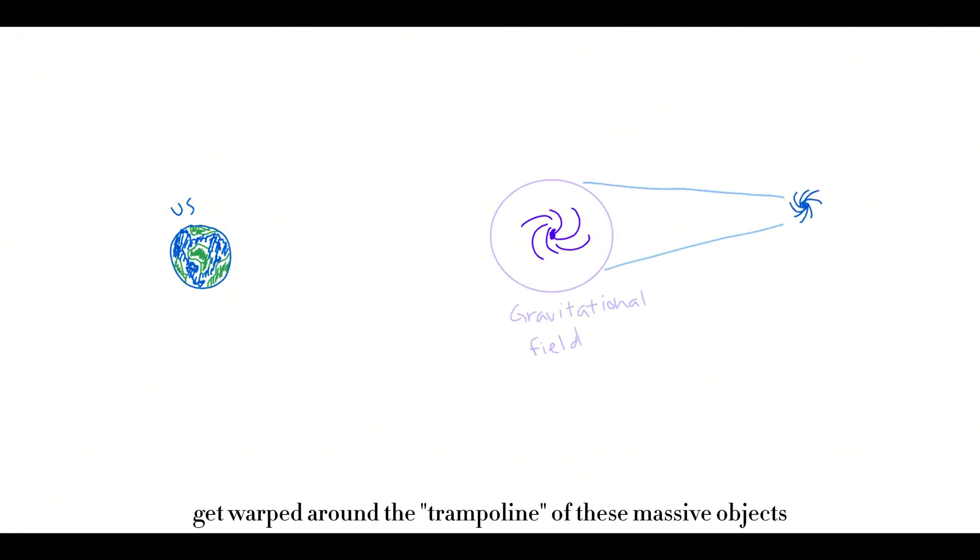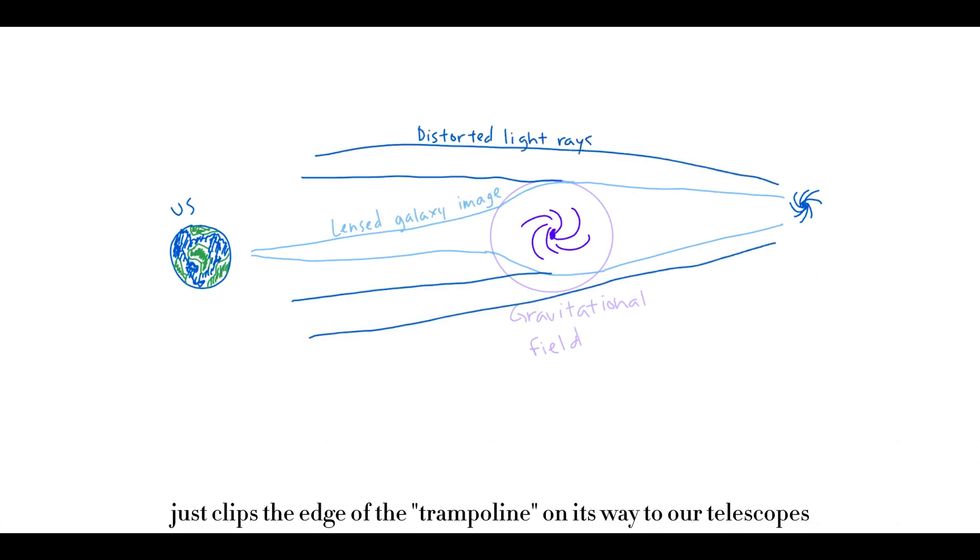That's essentially what these massive objects are doing to light particles on a cosmic scale. These light particles, as they travel towards us, get warped around the trampoline of these massive objects on its way to us. What it will do is get slightly warped as it just clips the edge of the trampoline on its way to our telescopes, and that is what we observe in our telescope.